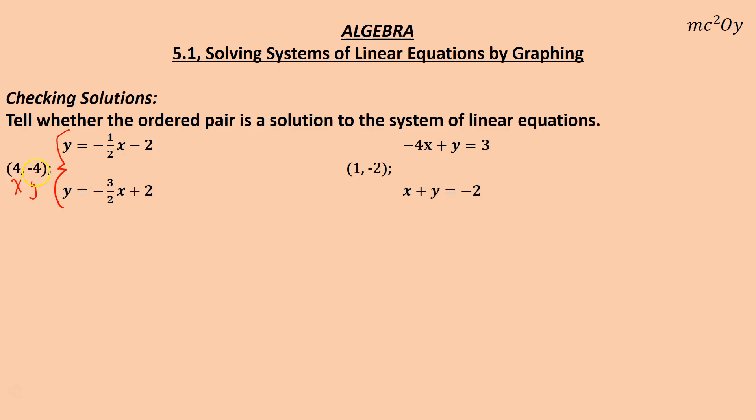So in other words, if 4 negative 4 gets put in for x here, 4 here, and negative 4 for y, and I get a true statement, it means this point lies on this line because it's a solution. If I plug in 4 for this x and negative 4 for this y, and it makes it true, it lies on this line. And if it lies on both of these lines, then it's a solution. It means that it will cross, that point will be the exact point at which these two lines cross.